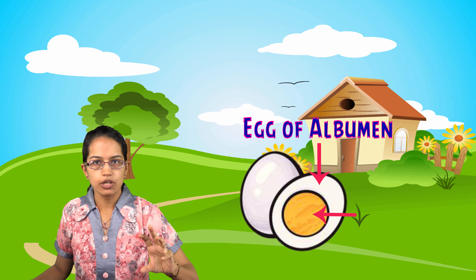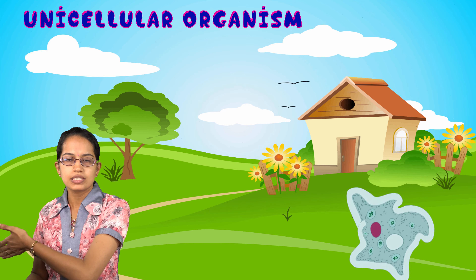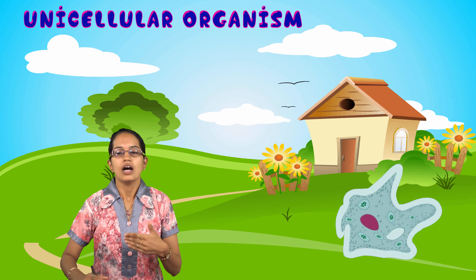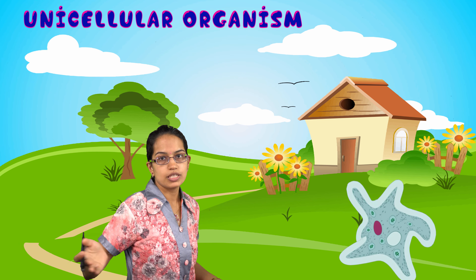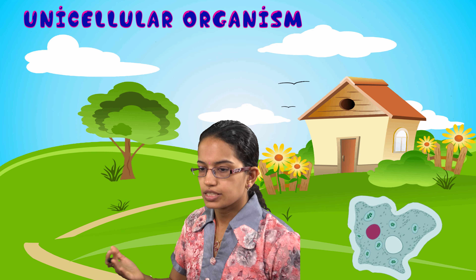Unicellular organisms include amoeba, paramecium, and Euglena. Amoeba is unique because it does not have a defined shape — it has pseudopodia, where pseudo means false, so these are considered as false legs that keep changing their shape. Amoeba keeps on changing its shape as it moves and captures food. Amoeba reproduces by binary fission, which we will understand in later classes on reproduction of unicellular or asexual organisms.